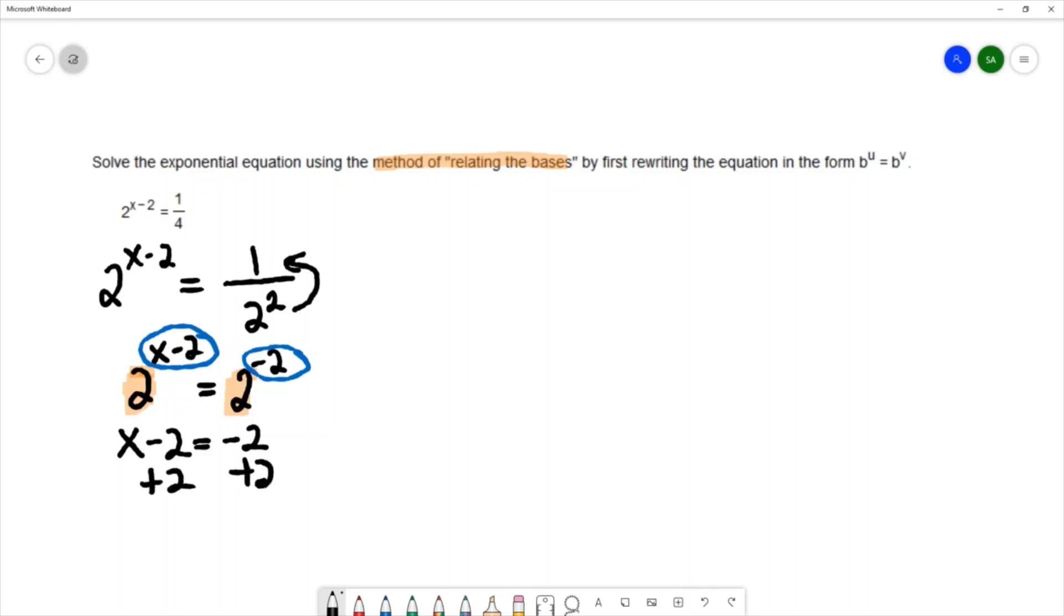And this gives me x equals 0. So the solution to the equation 2 to the x minus 2 equals one-fourth is x equals 0.